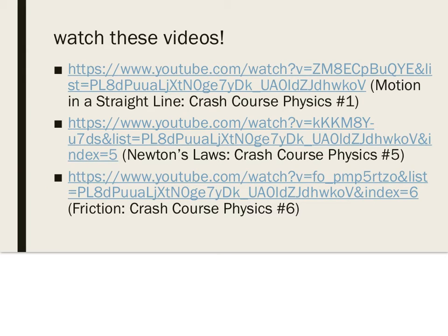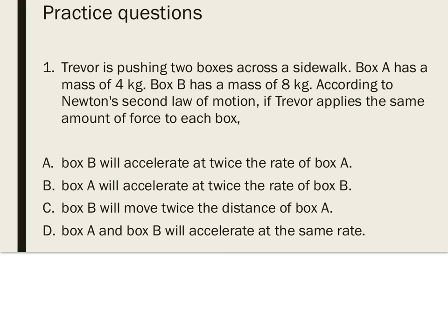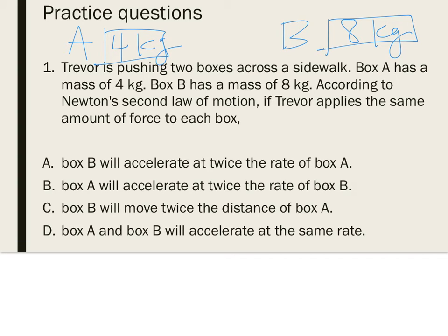Make sure to watch the three videos covering motion, Newton's laws, and friction. Practice question one: Trevor is pushing two boxes across a sidewalk. Box A has a mass of four kilograms and box B has a mass of eight kilograms. According to Newton's second law of motion, if Trevor applies the same amount of force to each box, what is going to happen? Answer choices: A) box B will accelerate at twice the rate of box A; B) box A will accelerate at twice the rate of box B; C) box B will move twice the distance as box A; or D) box A and B will accelerate at the same rate.